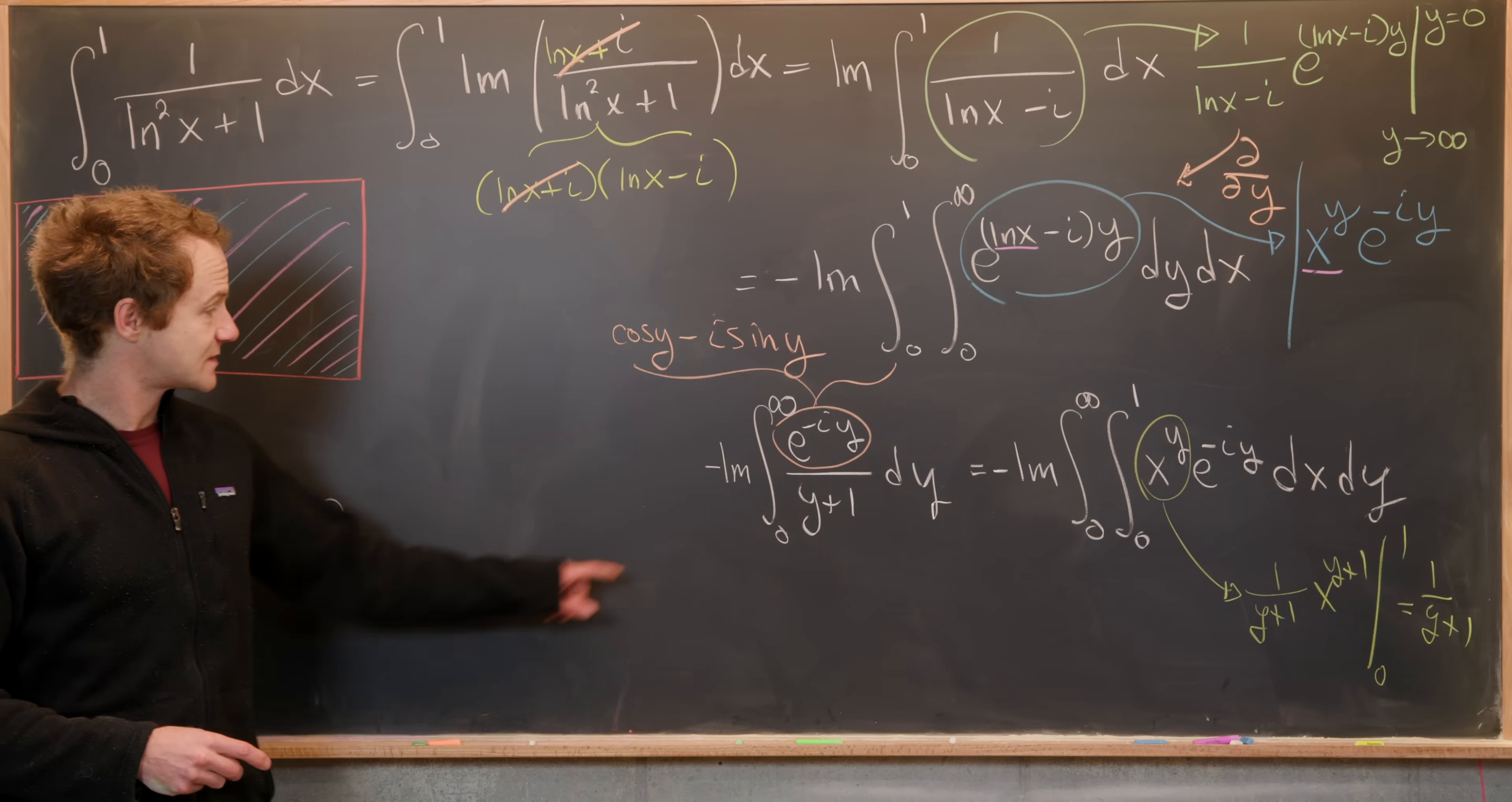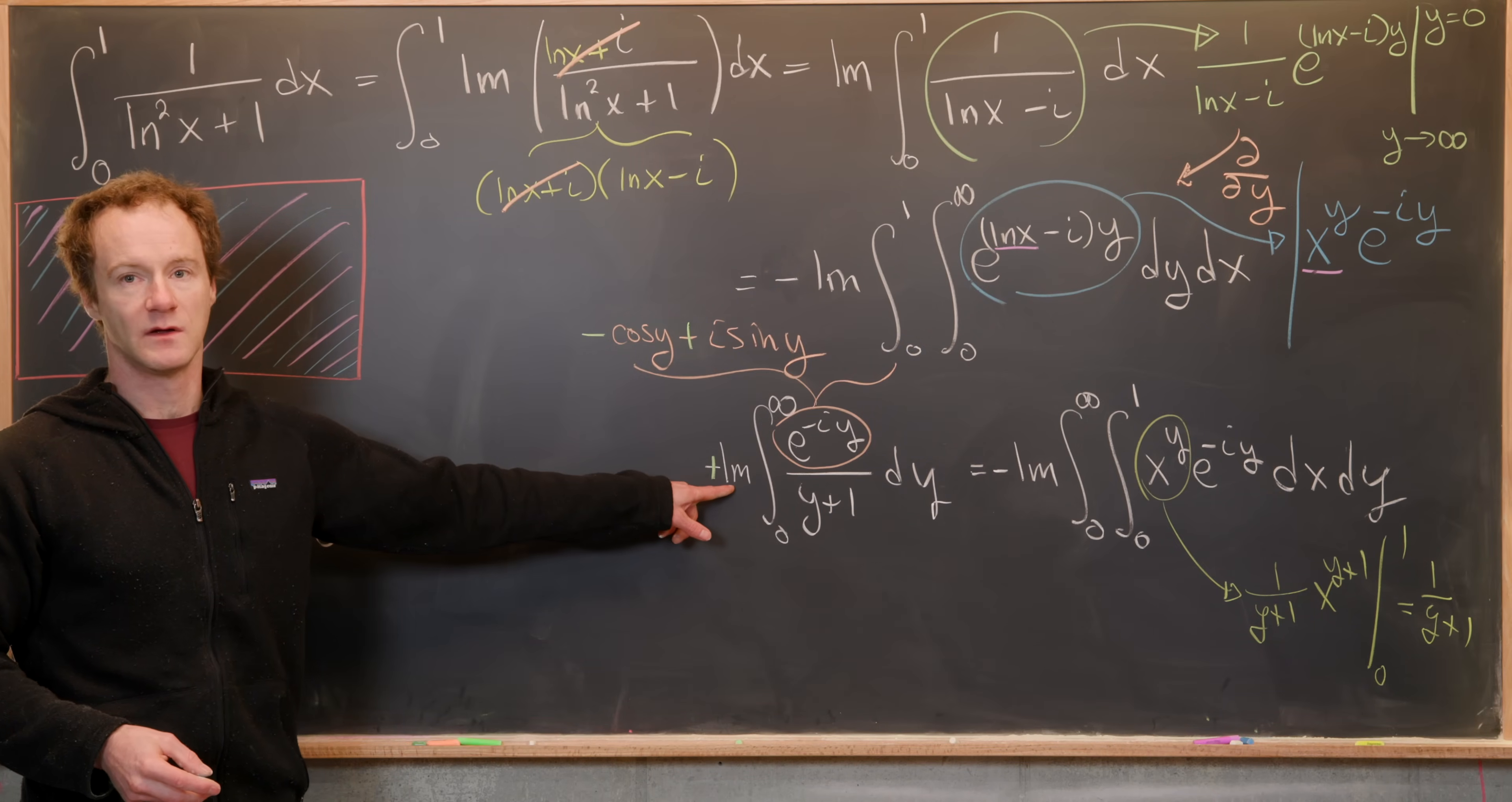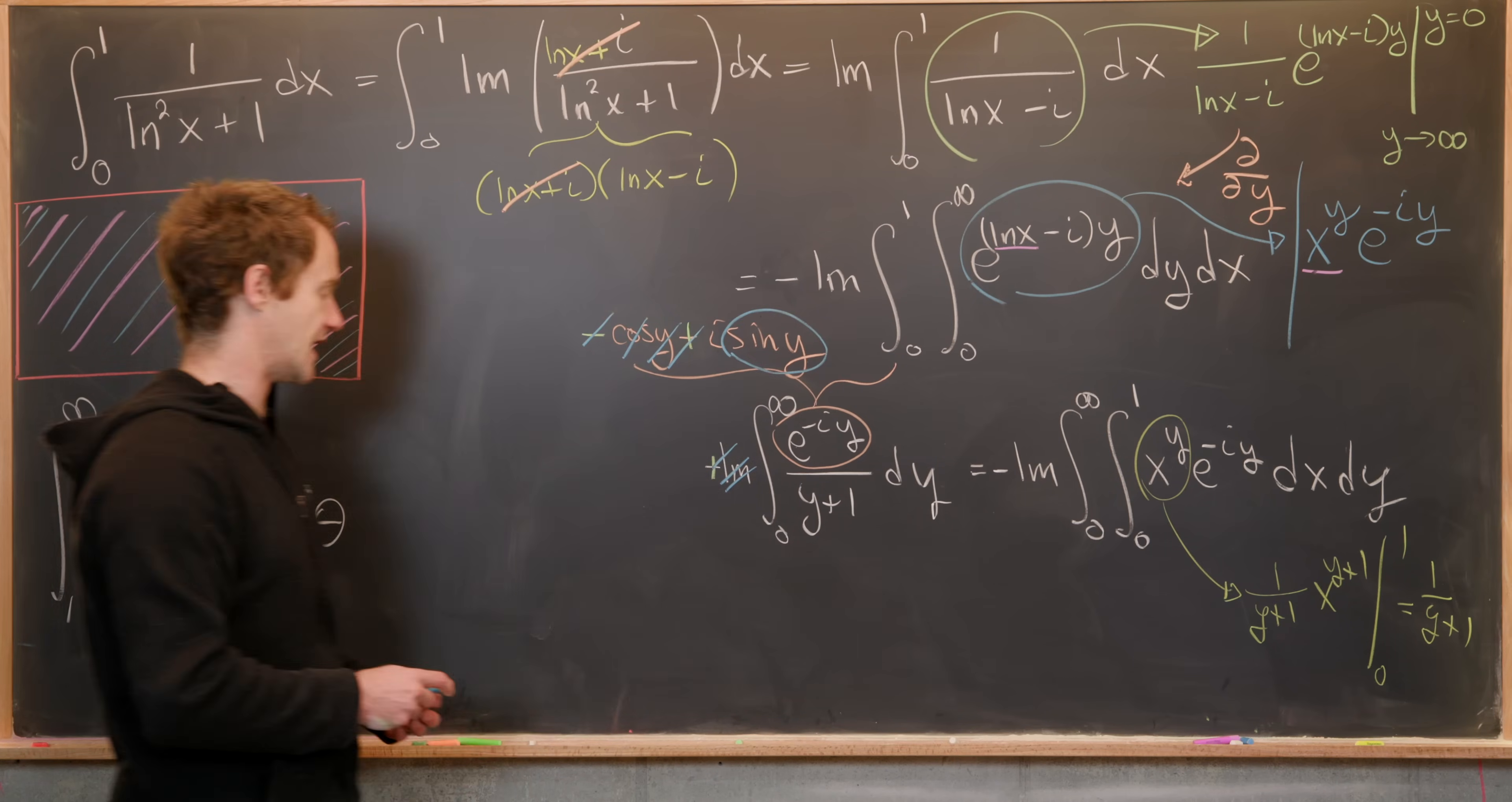Then next, we can take this minus sign, turn it into a plus, and distribute it through here. And finally, take this imaginary part, and actually take the imaginary part. So the only thing contributing to the imaginary part of this is sin(y). So I'll scrub off this imaginary part, and just leave us with sin(y).